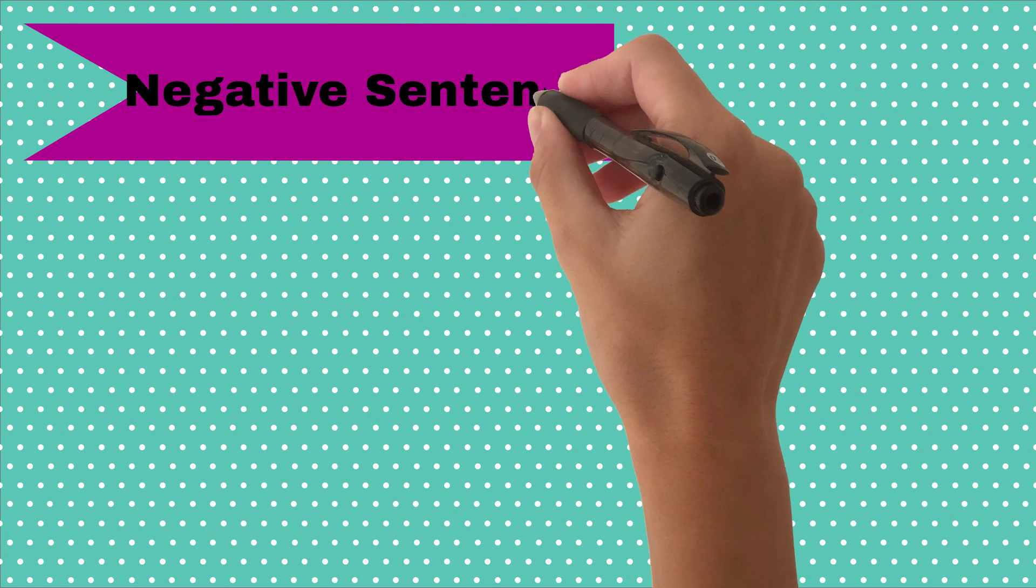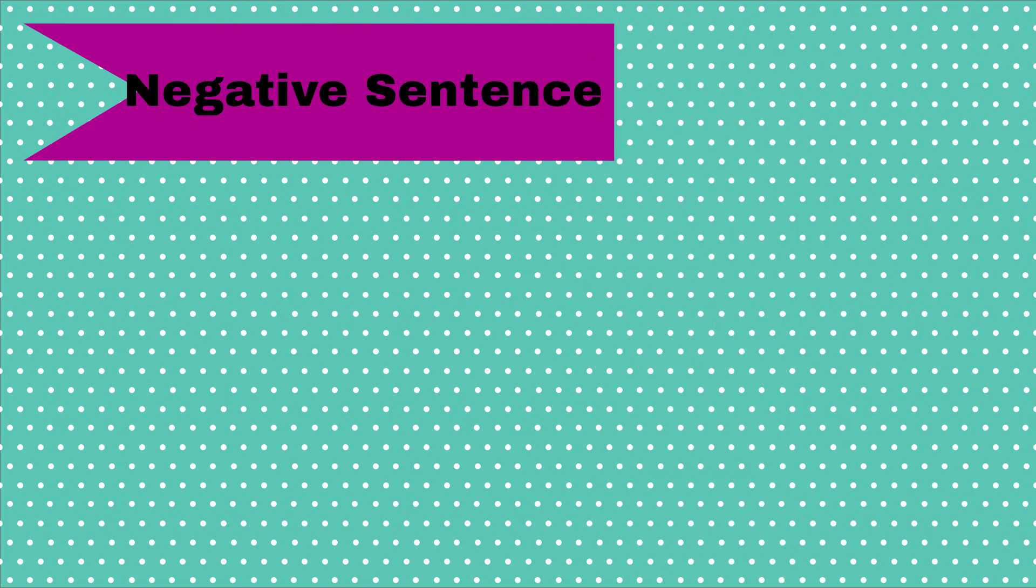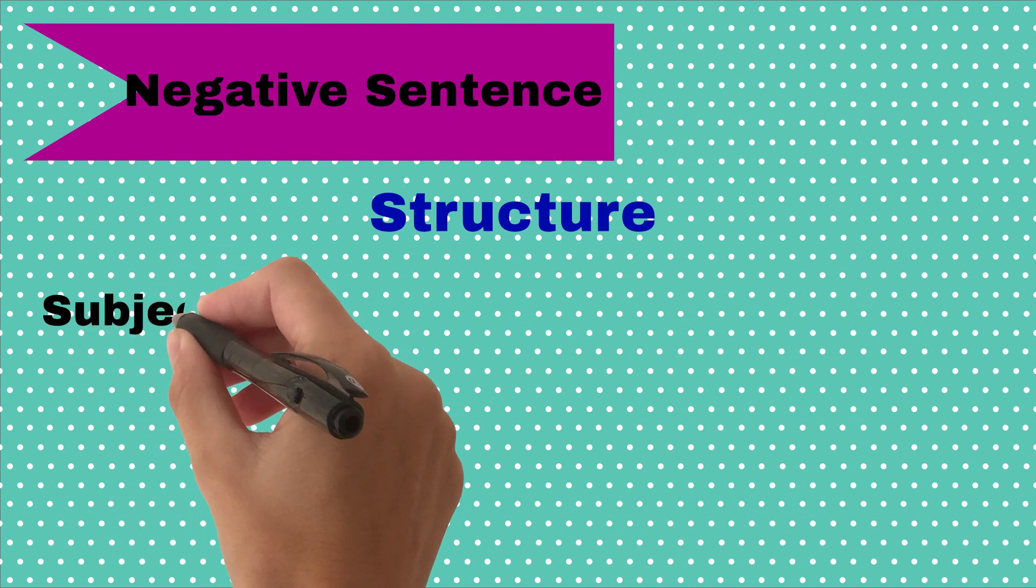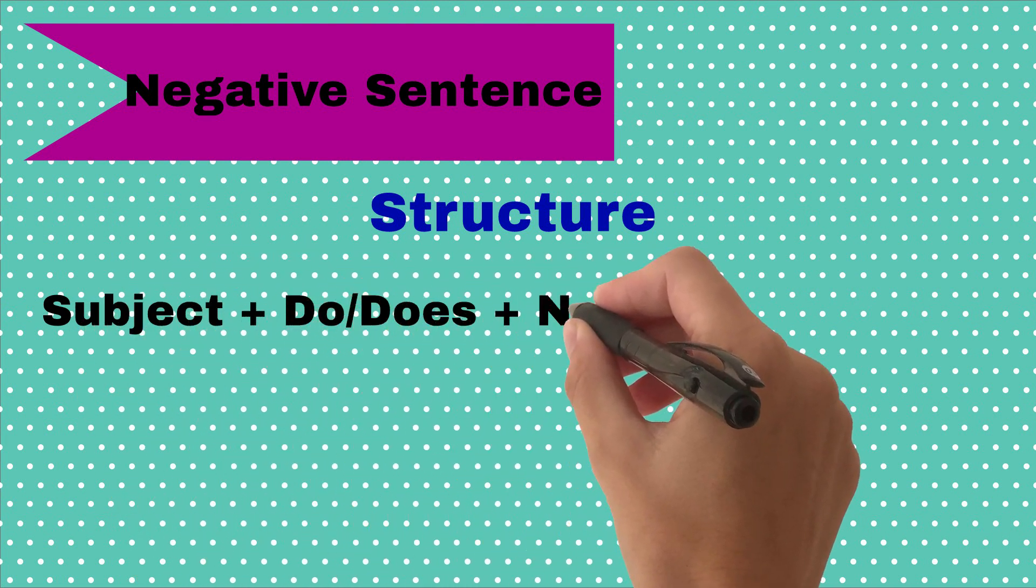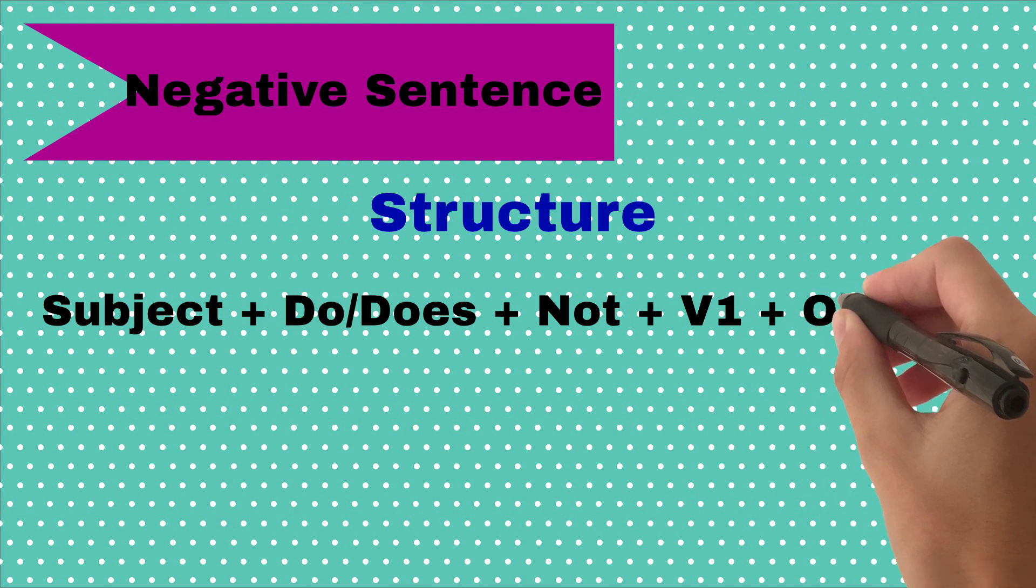Formation of negative sentences. Its structure is: Subject plus do or does, plus not, plus first form of verb, plus object.